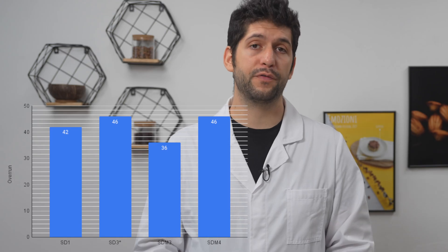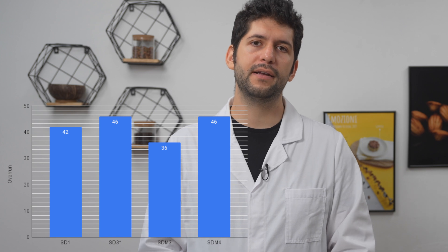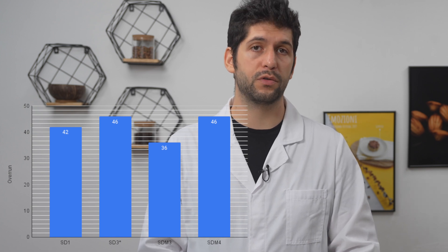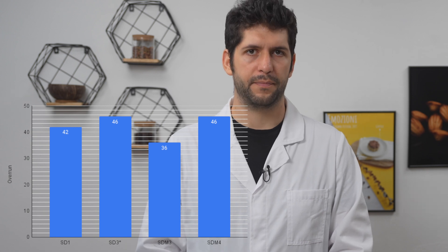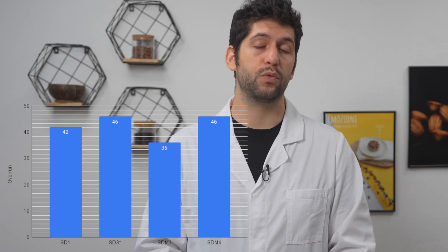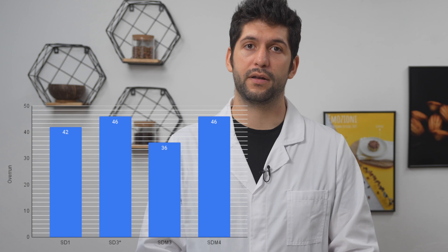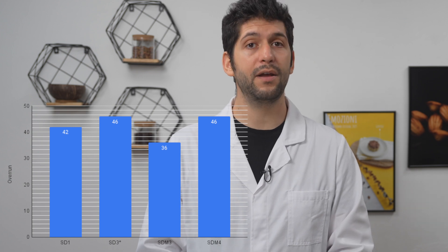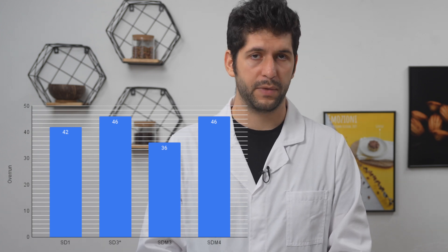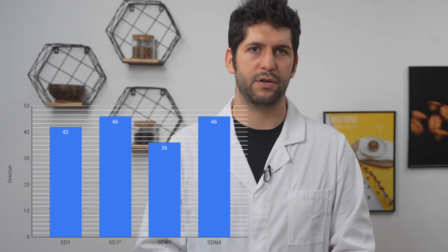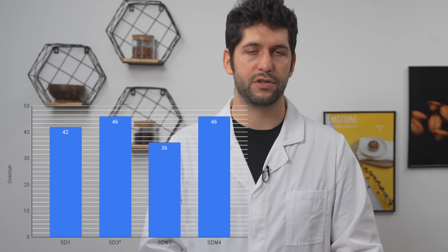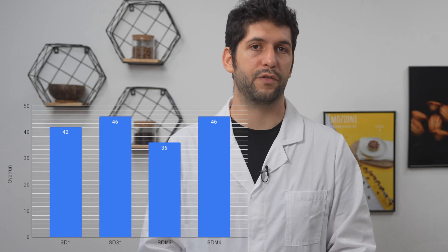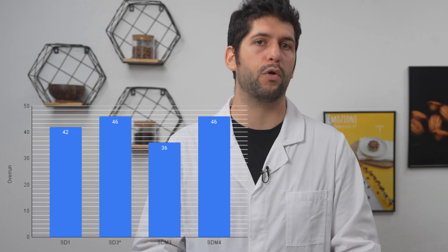In terms of overrun, we see immediately that the sample with only sucrose and maltodextrin was the one with the lowest overrun, and the two with the highest overrun were the one with the most dextrose and the one with dextrose and maltodextrin. So if you want to increase the overrun, you don't necessarily need to put only a lot of dextrose — you can use a combination of dextrose and maltodextrin, or glucose syrups.